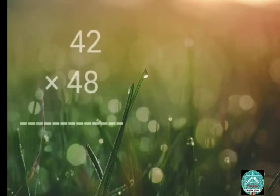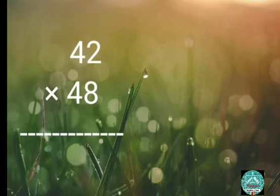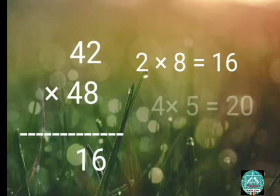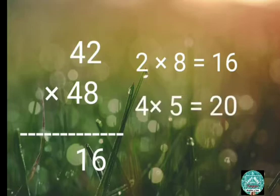Multiply 42 by 48. Multiply one's digits: 2 times 8 equals 16. Multiply 4 by its successor, that is 5: 4 times 5 equals 20. So the answer is 2016.